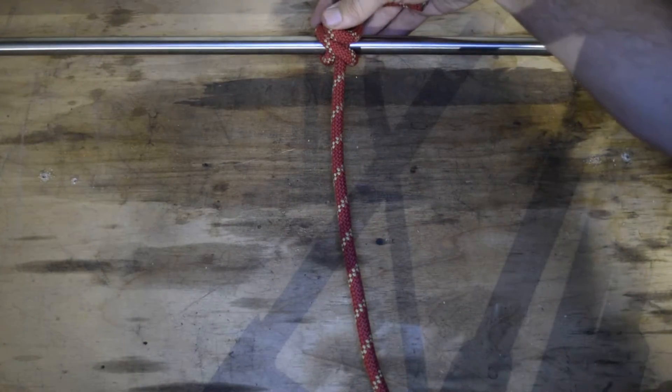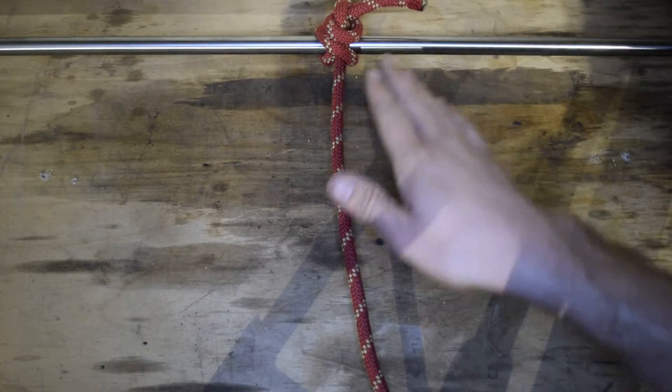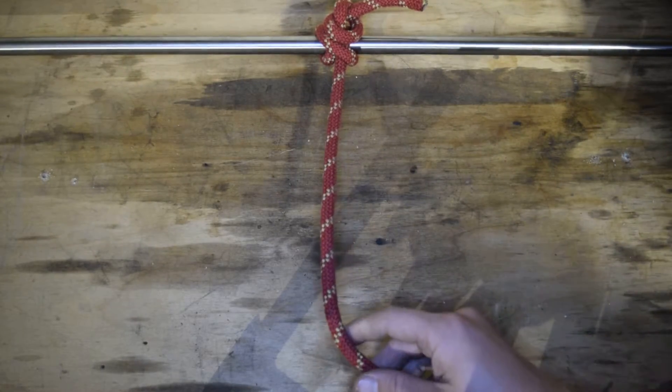I'm going to work on the inline figure 8. Up here I have a clove hitch with the safety to hold on to this bar, so that way I have a good opportunity to work with this rope down here.